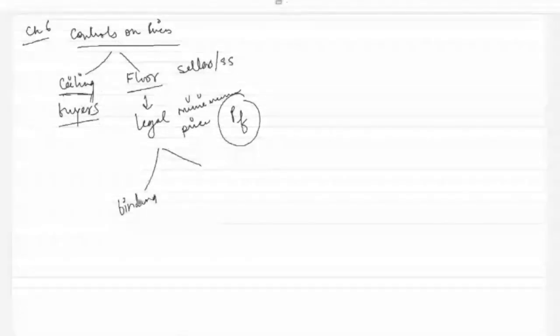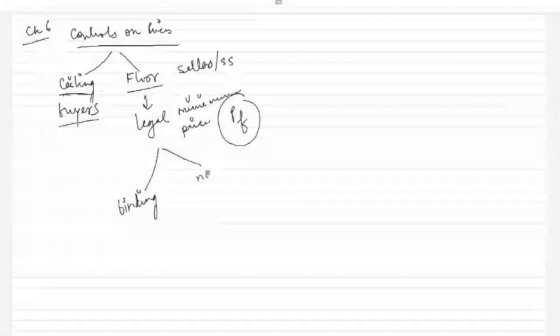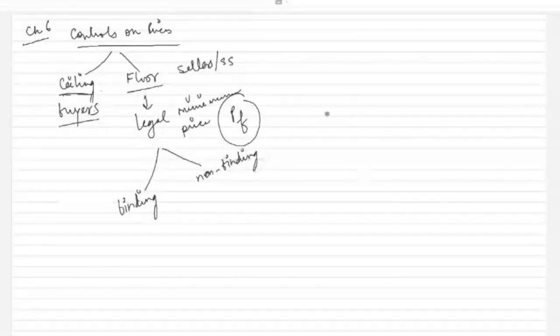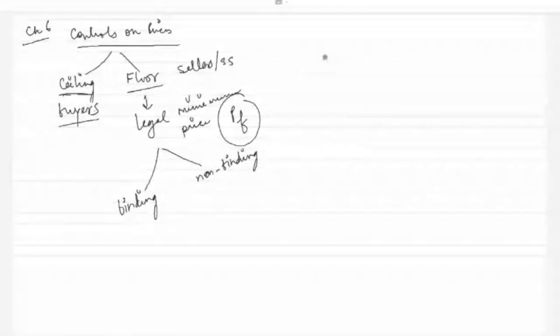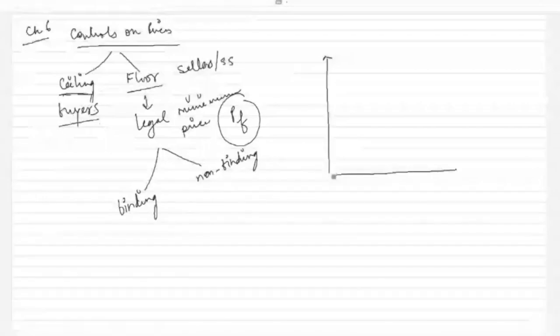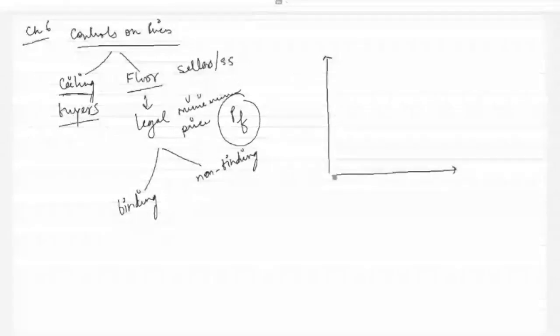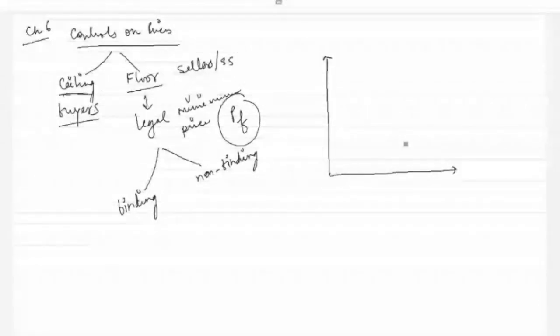Price floor can be of two types: one is binding and the other is non-binding. Let's look at which one will be binding and which one will be non-binding.